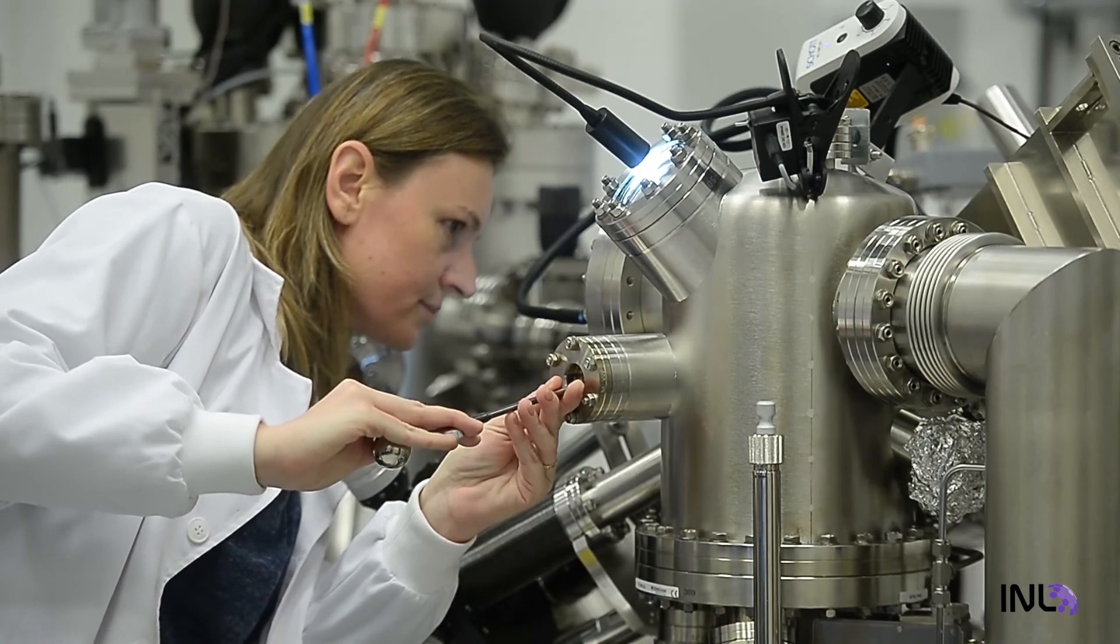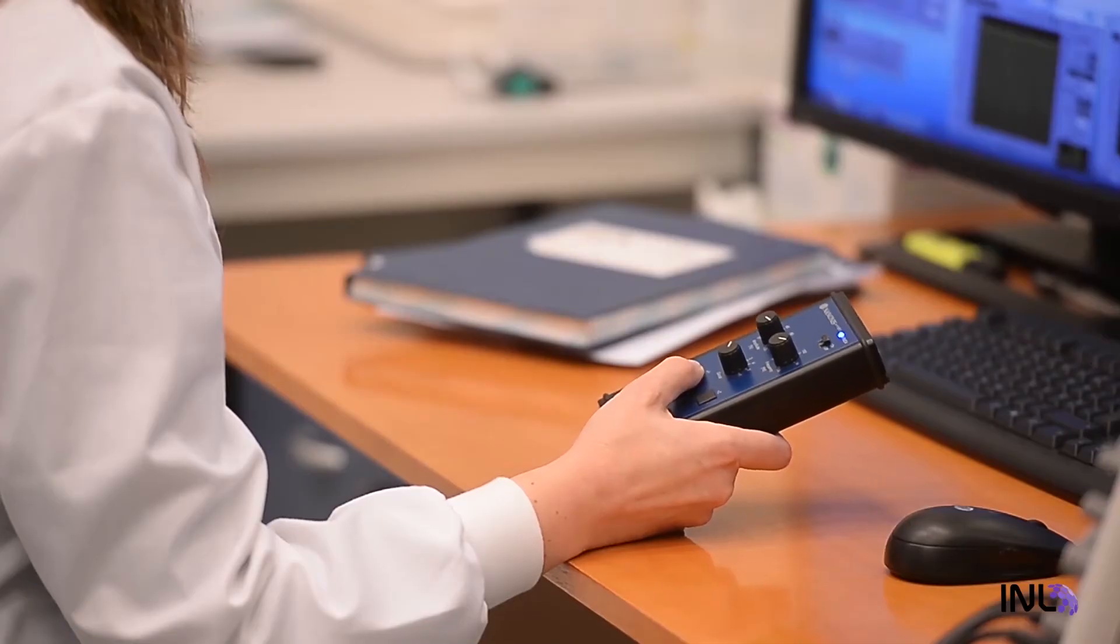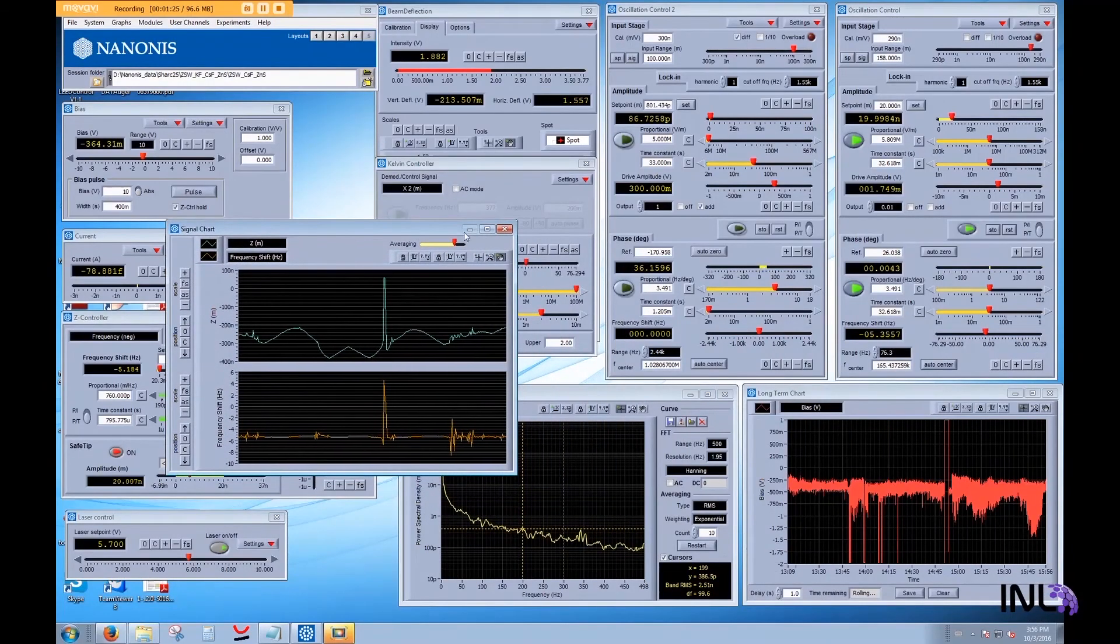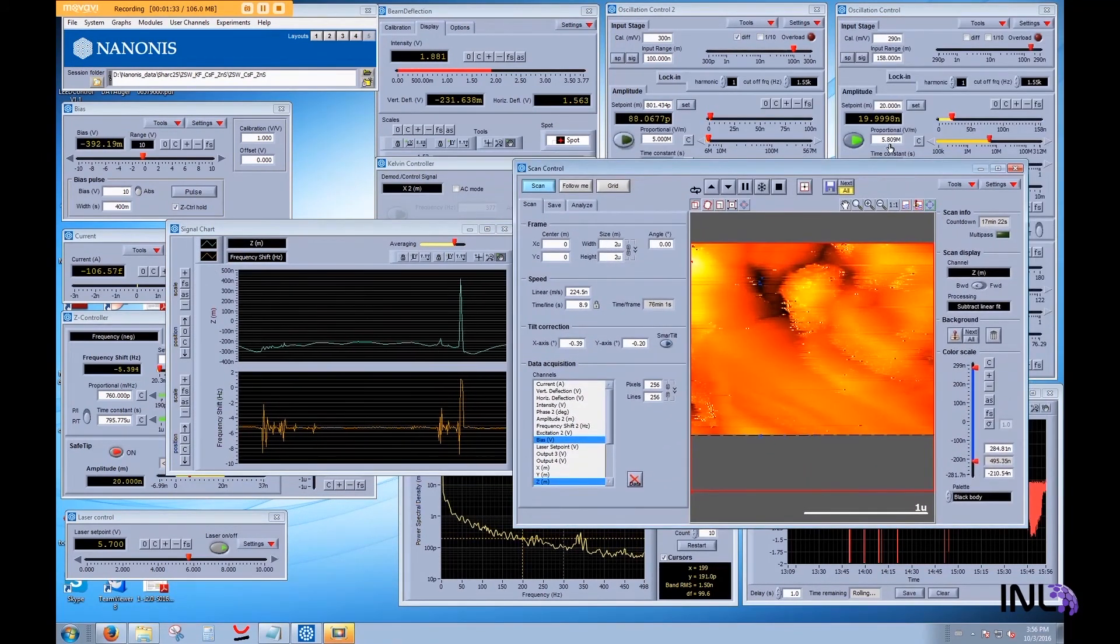In this technique, a very sharp tip supported at the end of a microfabricated cantilever beam is used to sense the forces between the tip and the sample surface. By carefully scanning this tip across the sample surface, an image of the surface topography can be obtained.